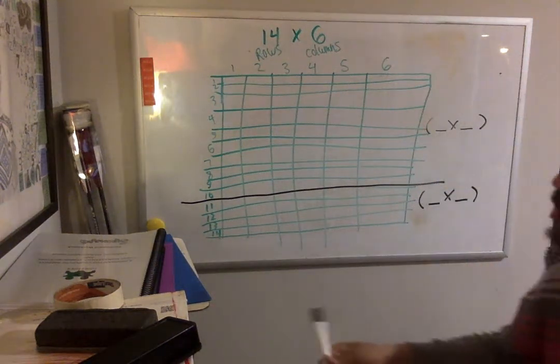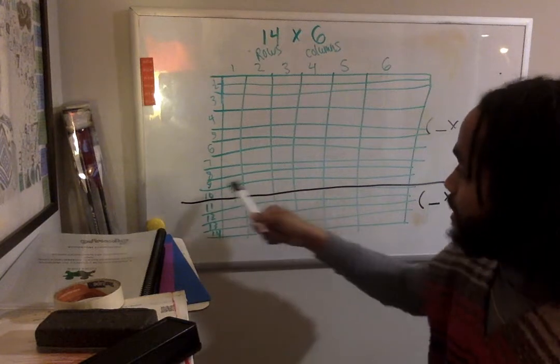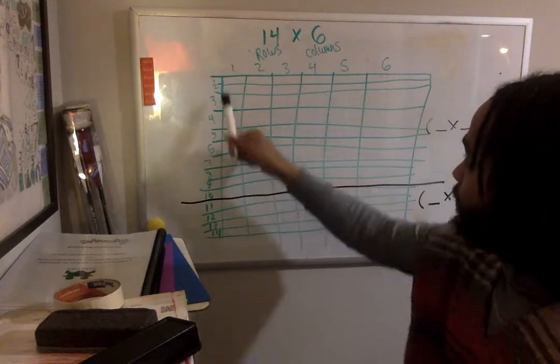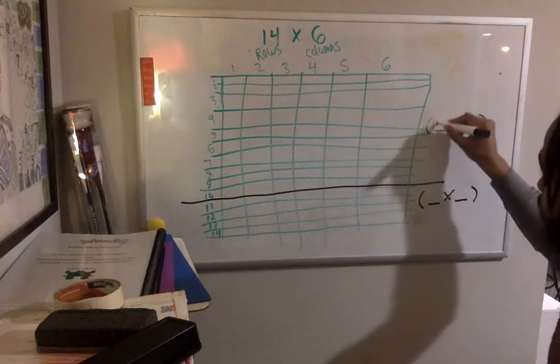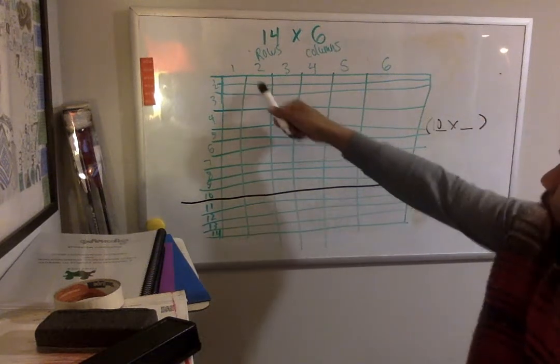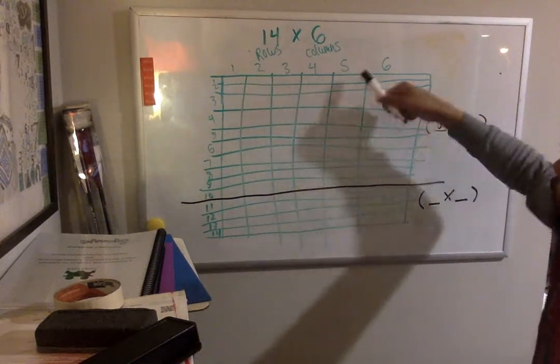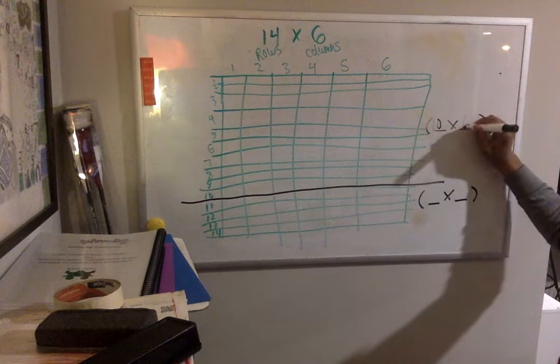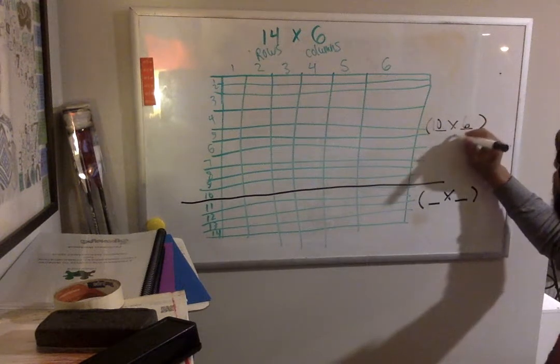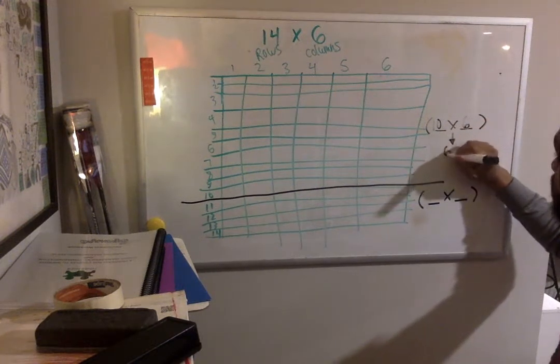All right. So when I look, I have 10 rows right here. So 10 is my first factor. And then I have 1, 2, 3, 4, 5, 6 columns. So 10 times 6.